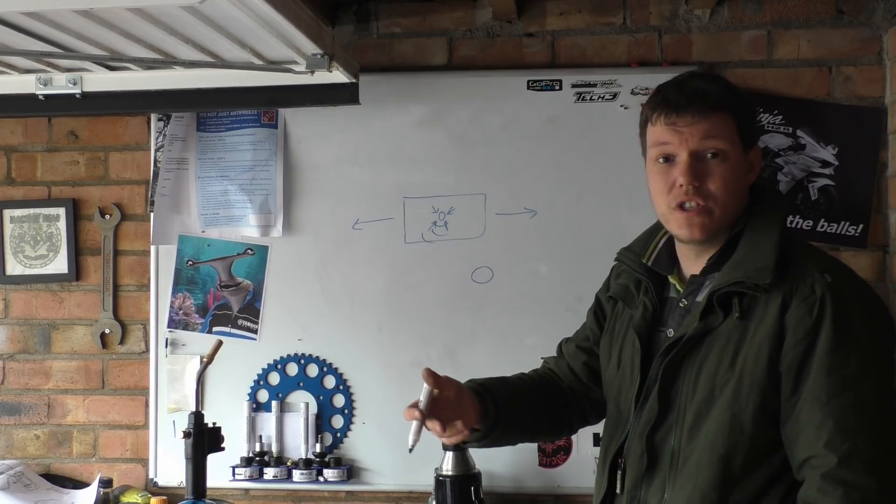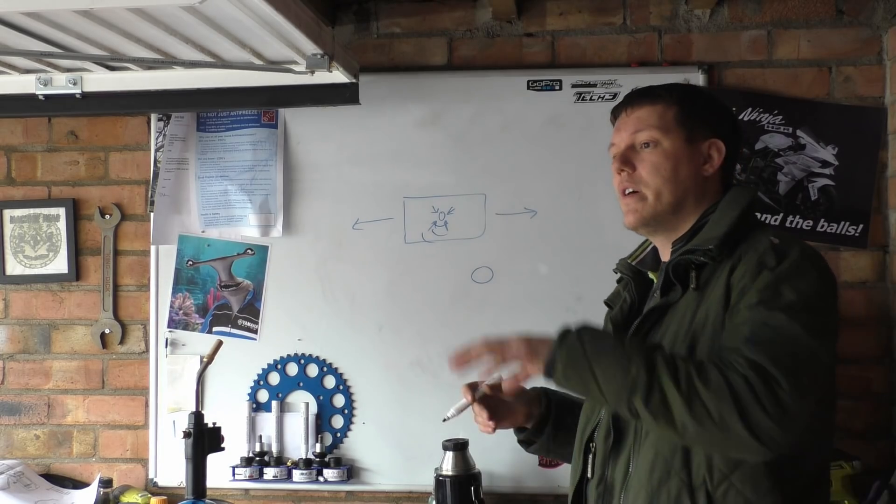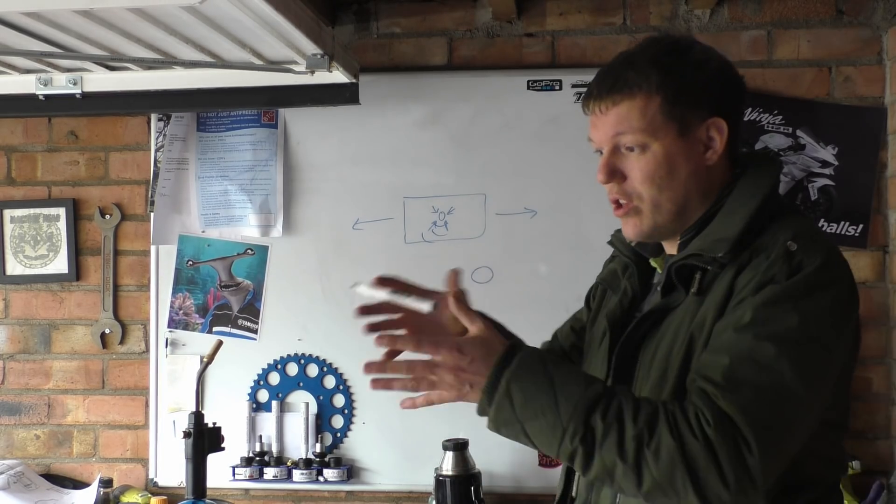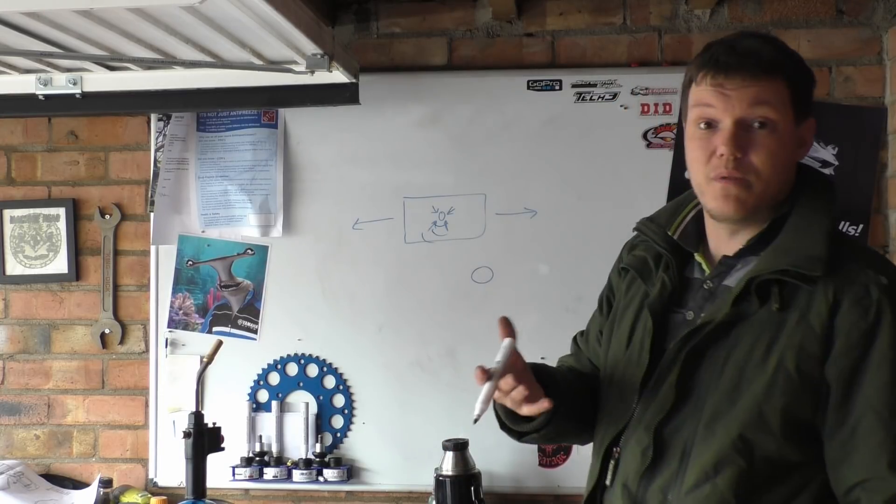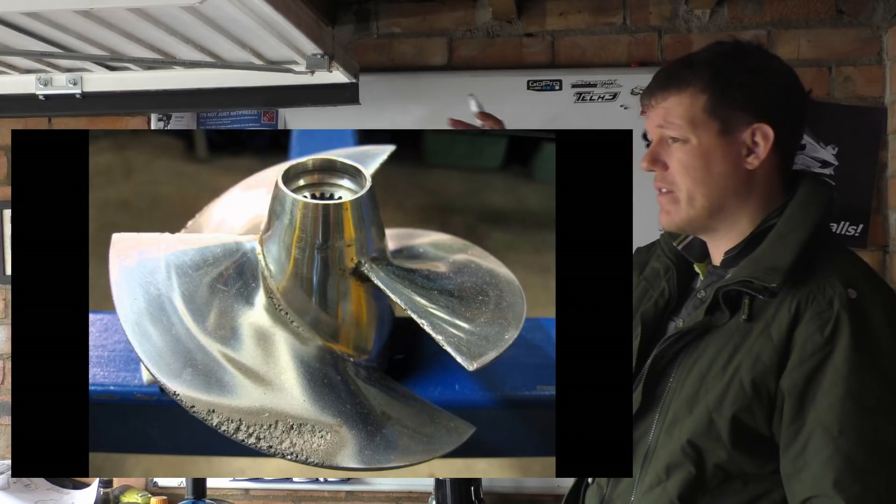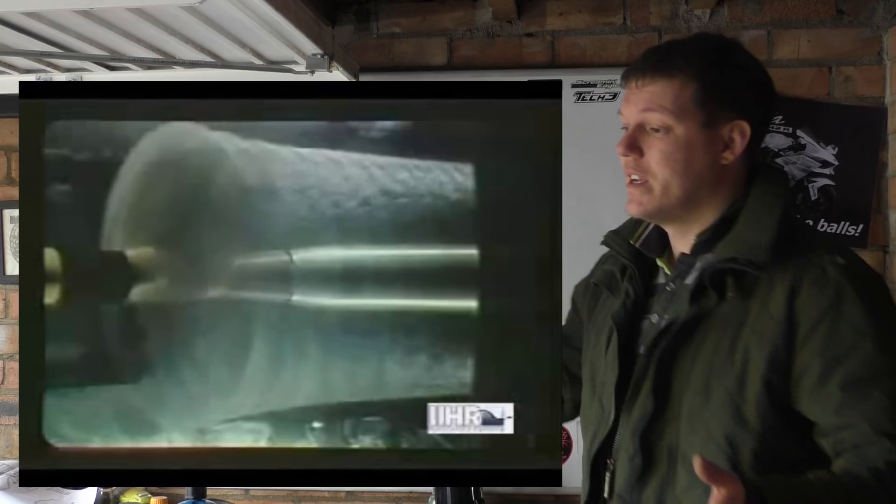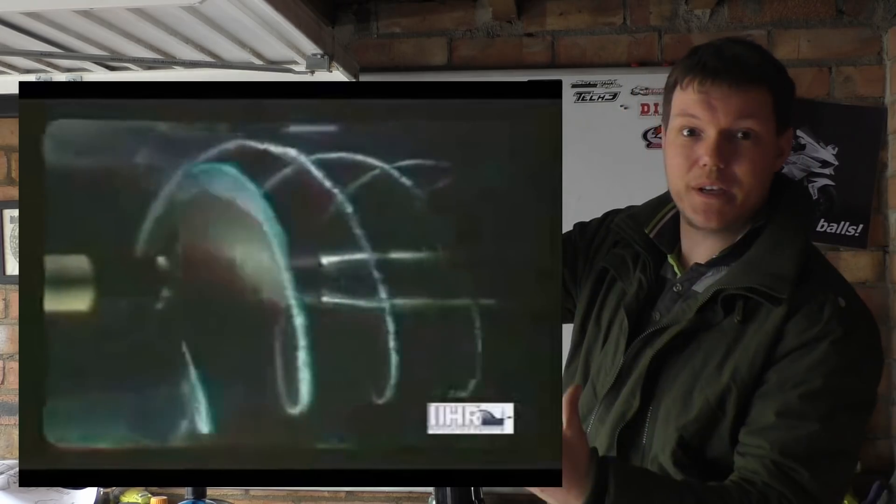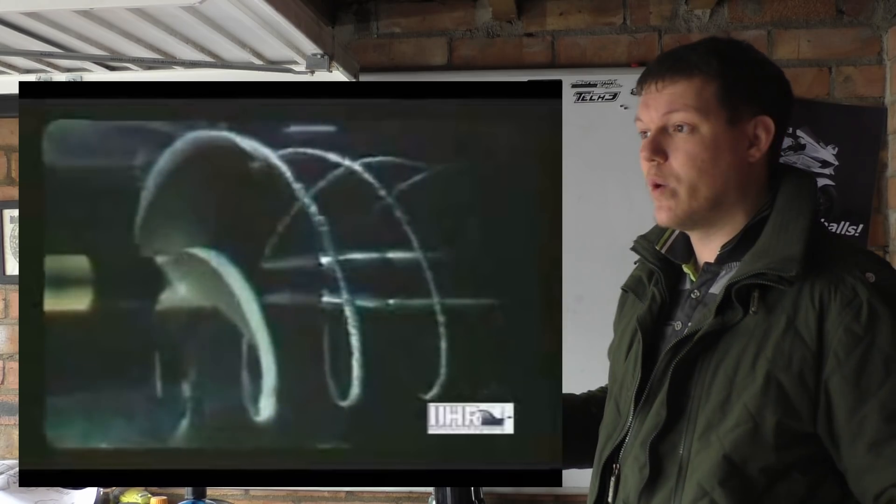He said there are torpedoes that use a nose cone that causes cavitation, creating a lower pressure region so the torpedoes can be quicker, which is quite cool. Propellers get cavitation on the sides of blades. The blade passes through, pushing water out of the way, and a void appears behind it because water can't fill that void quick enough.